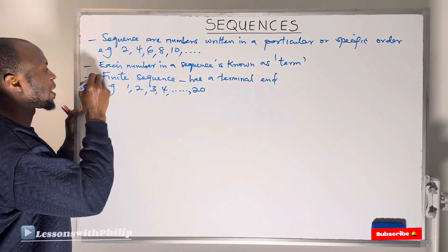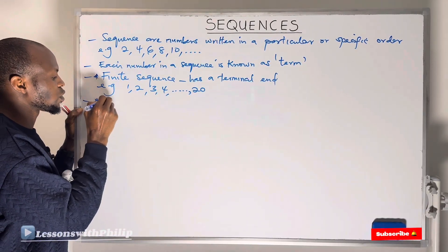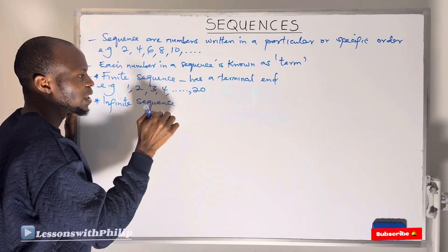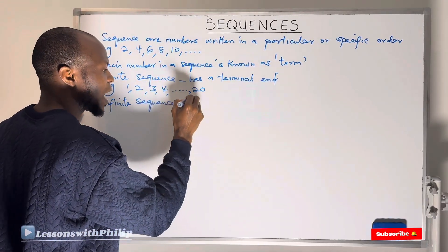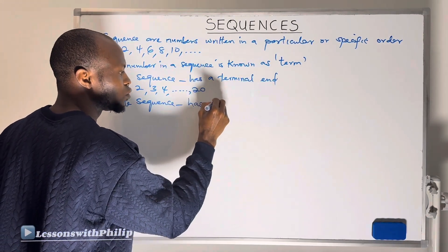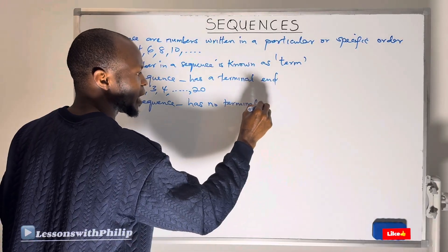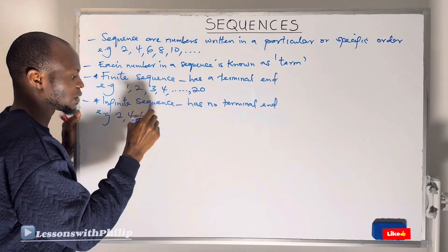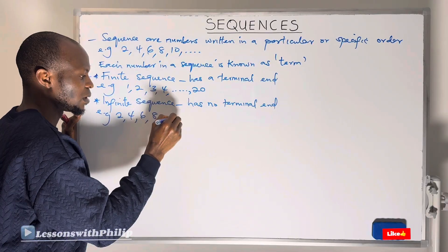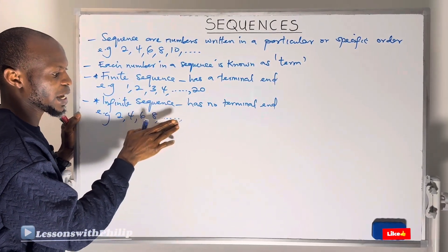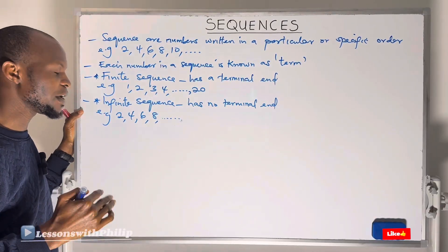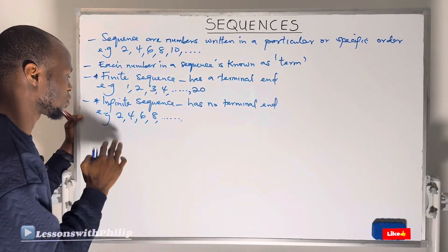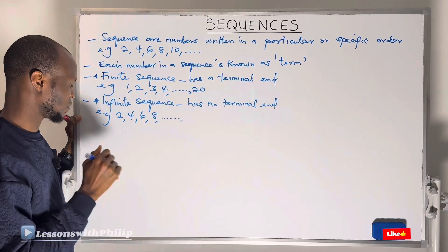An infinite sequence is the opposite of a finite sequence. It is a sequence that has no terminal end. For example, if I write 2, 4, 6, 8 and it continues, this kind of sequence is known as an infinite sequence because it has no end.